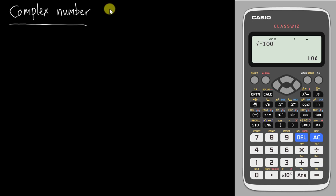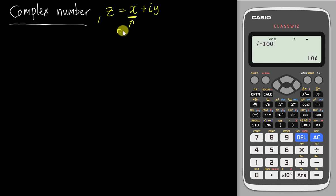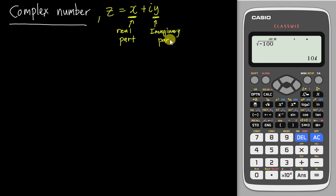This is why complex numbers are very important. We normally use z to represent a complex number. The pattern is z = x + iy. The x here is the real part, and the y together with i is the imaginary part — also called the imaginary number.